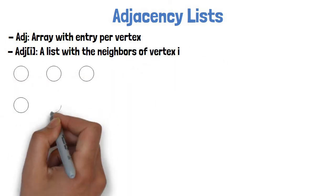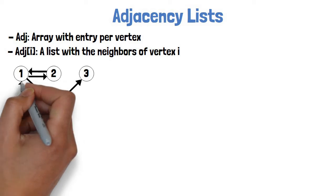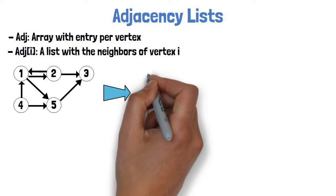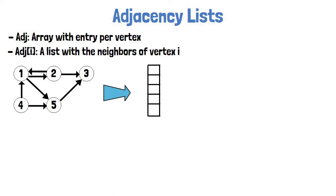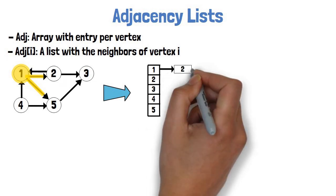Here is a directed graph for our first example. Let's see how its adjacency list representation will look. We have an array of size 5, one cell per vertex. Looking at vertex 1, we see there are two edges coming out of it to vertices 2 and 5. So the adjacency list for vertex 1 contains vertices 2 and 5.